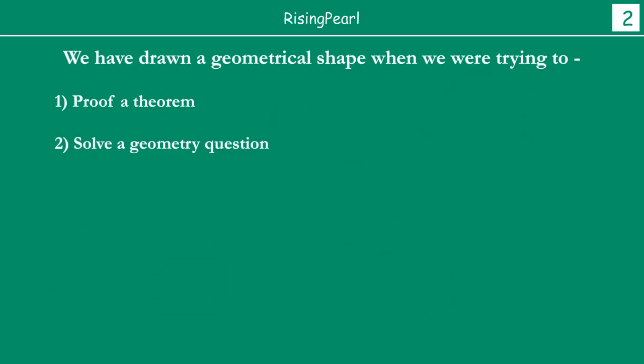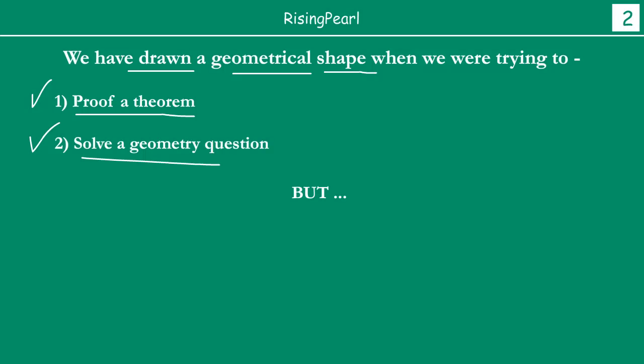Now, Dostho, what is also very important is — if you think about it, we have drawn geometrical shapes or figures for mainly two reasons. Ya toh humain koi theorem proof karni thi, ya phir humain koi geometrical question solve karni thi. Jab kabhi humain koi theorem proof karni ho ya geometrical question solve karni ho, tab hum geometrical figures aur shapes draw karte the. Now, ek aur chiz jo bahut important hai, Dostho, is that — aap agar gaur se socho ki jab kabhi humain geometrical shapes figures draw ki hai ab tak, we have actually drawn rough diagrams.